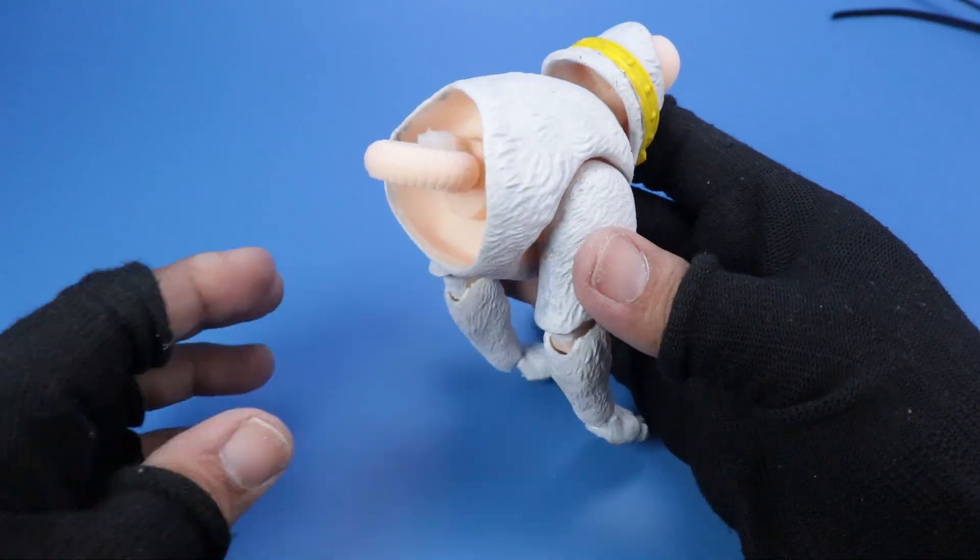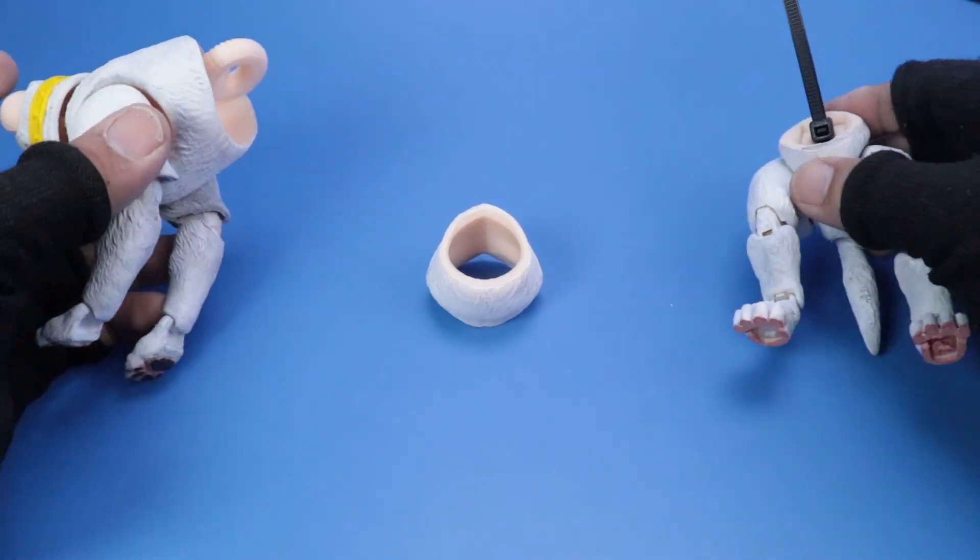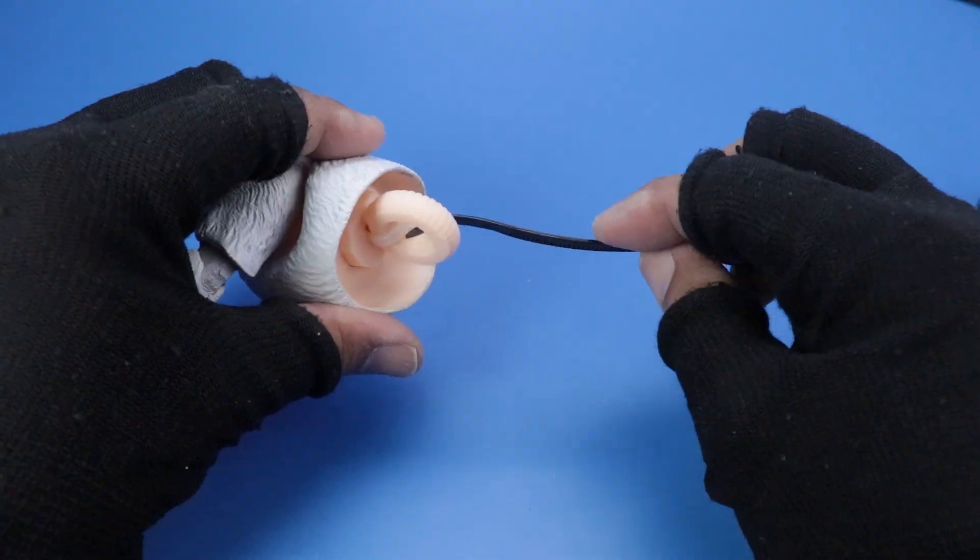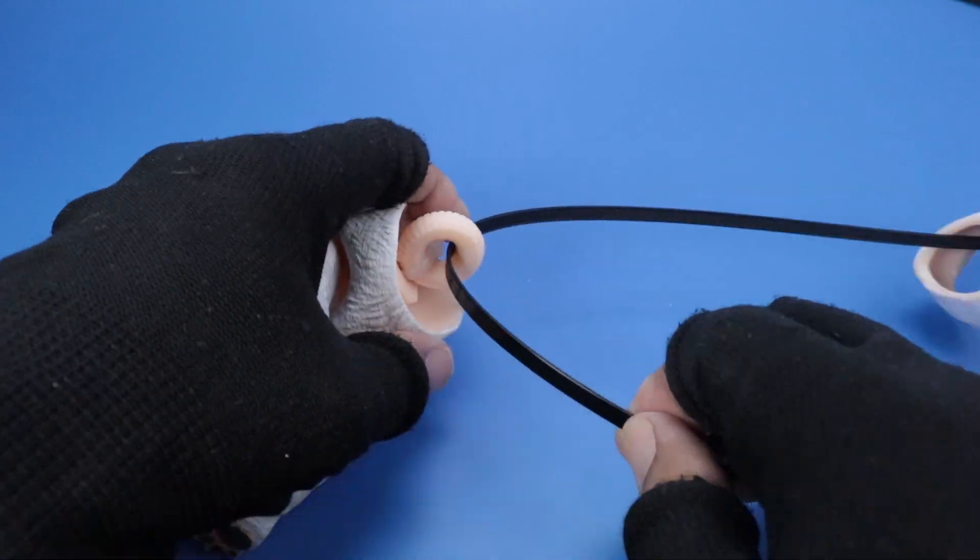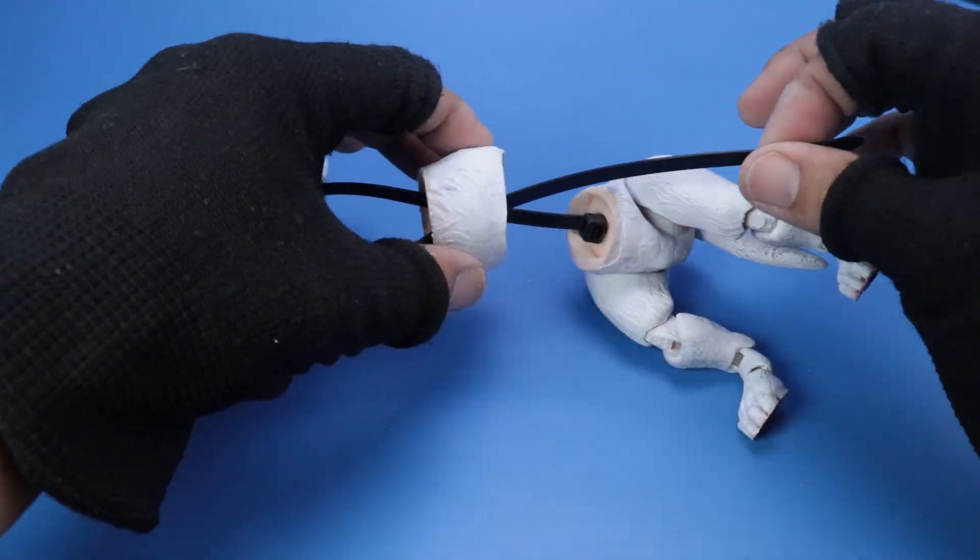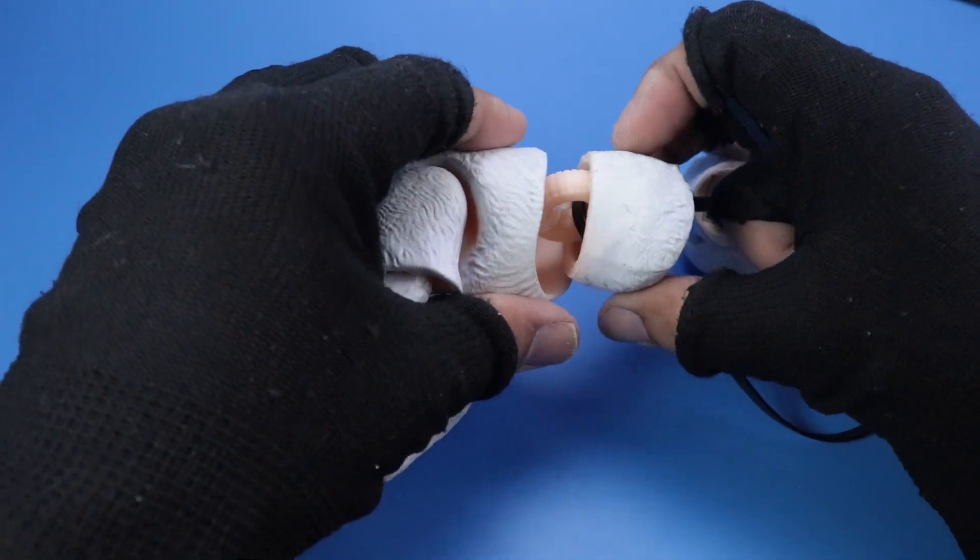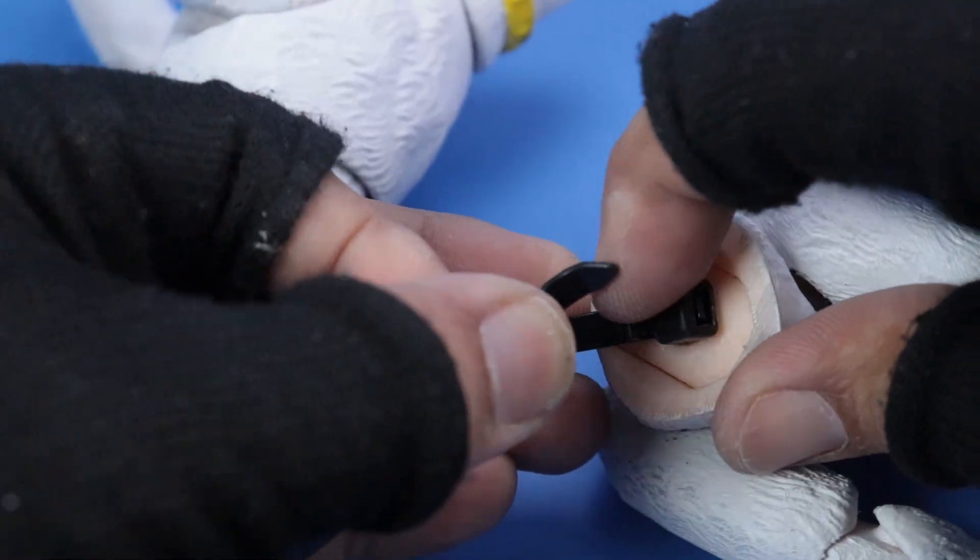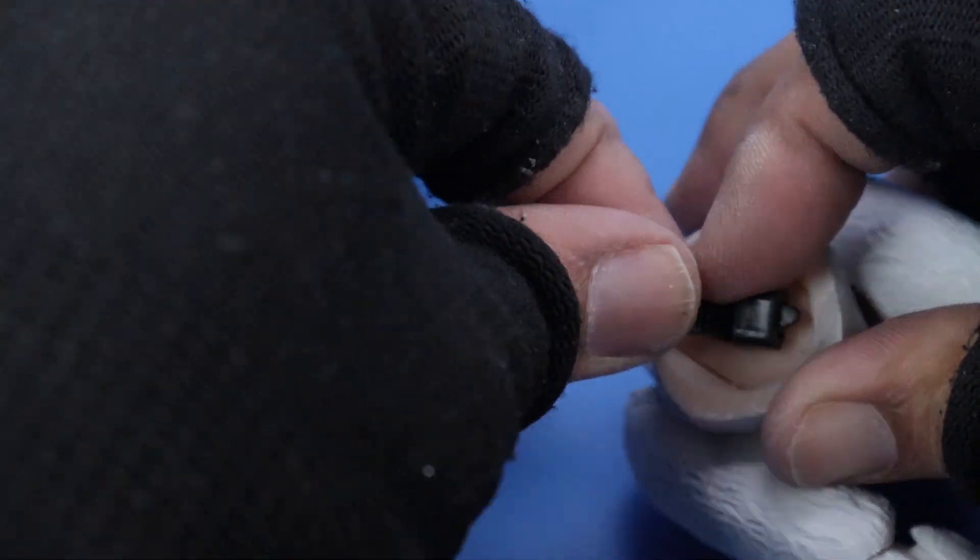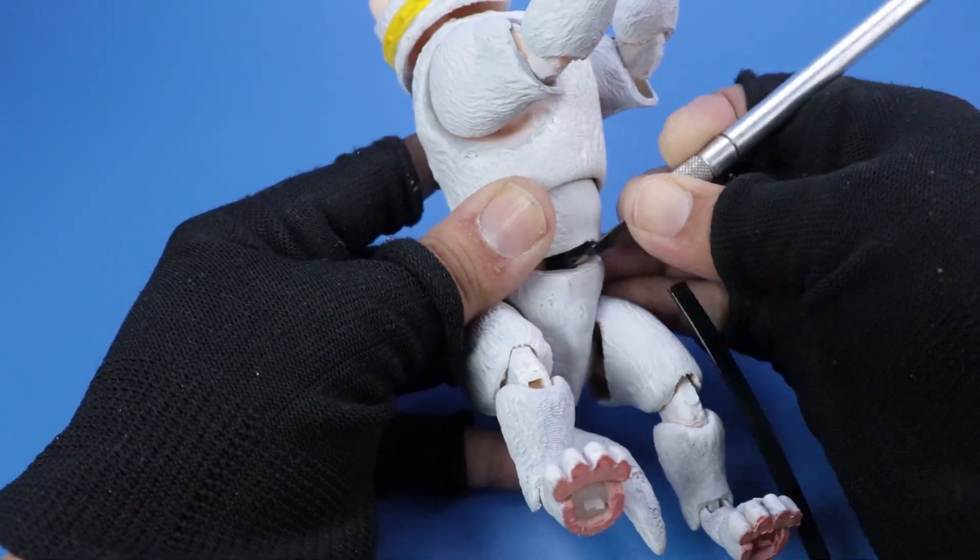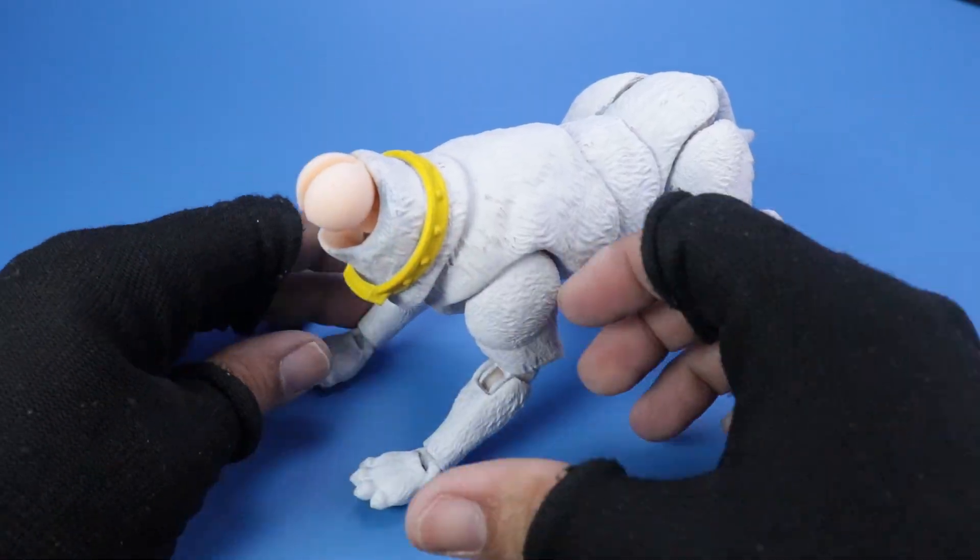Next, it's time to assemble the torso. Take the zip tie from the pelvis and pass it through the midsection piece. Then loop it through the torso donut. Feed it back into the midsection. Position the middle part against the chest by turning it 90 degrees, pressing it close to the chest, and then rotating it back into place. Lock the zip tie, tighten, and trim off the excess.